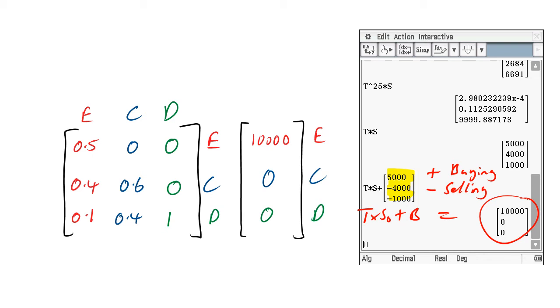We want this situation where T*S0 plus B equals the same thing S0 again. That's how we force a steady state situation. This is exactly the same as that idea of compound interest. This is like a payments situation. It's the same sort of maths.